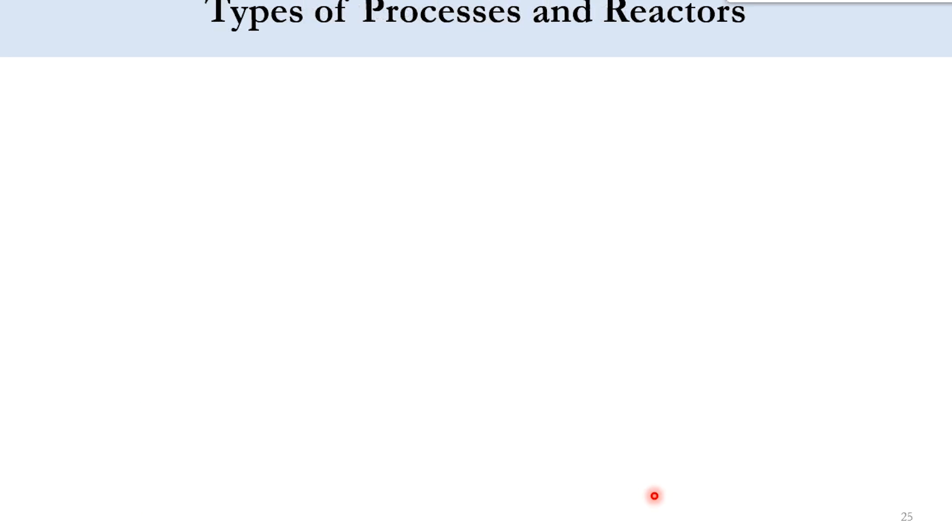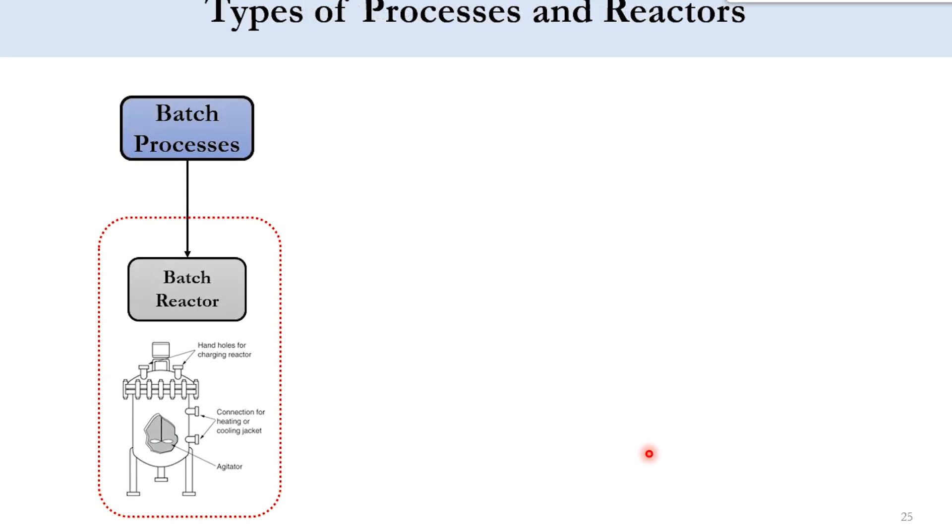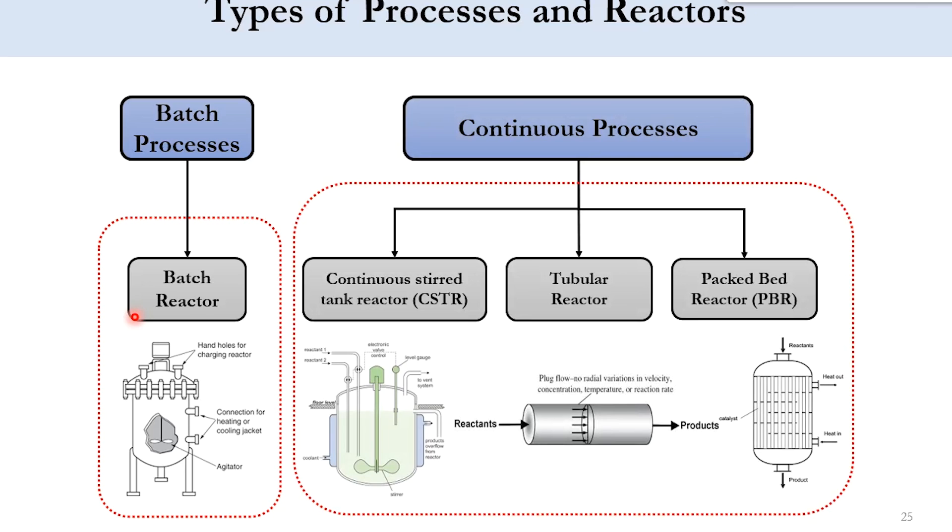After that we will move to the different types of processes and reactors in the system. The first process is the batch process which includes batch reactor. Then the continuous process which includes three types of reactors: continuous stirred tank reactor, tubular reactor, and packed bed reactor. The major classification is batch and continuous, among which there are four reactors.